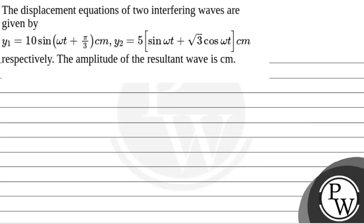Let us see the question. The displacement equation of two interfering waves are given by y1 equals 10 sin omega t plus pi by 3 cm and y2 is 5 into sin omega t plus root 3 cos omega t cm. How we find the amplitude of the resultant wave in cm.